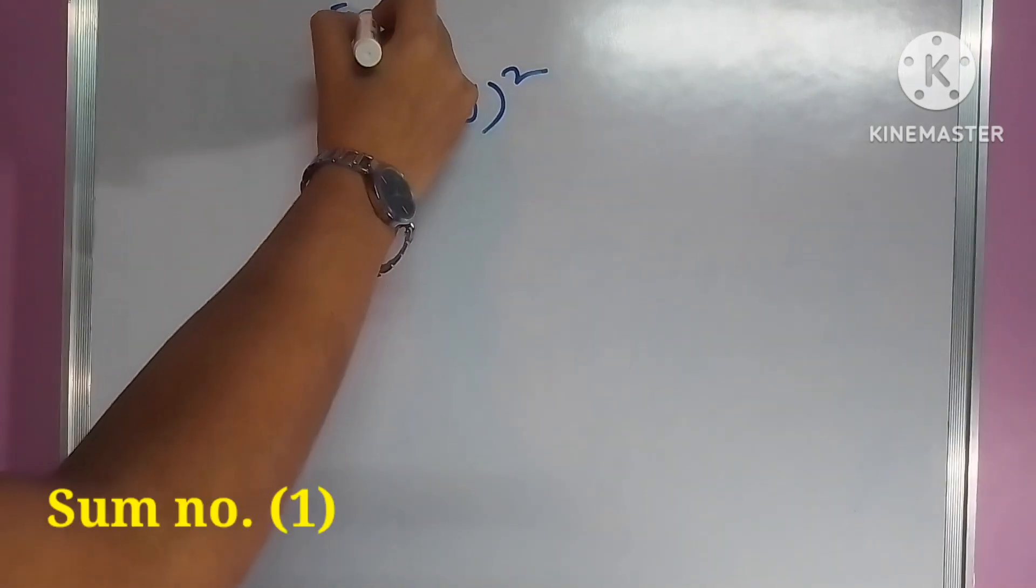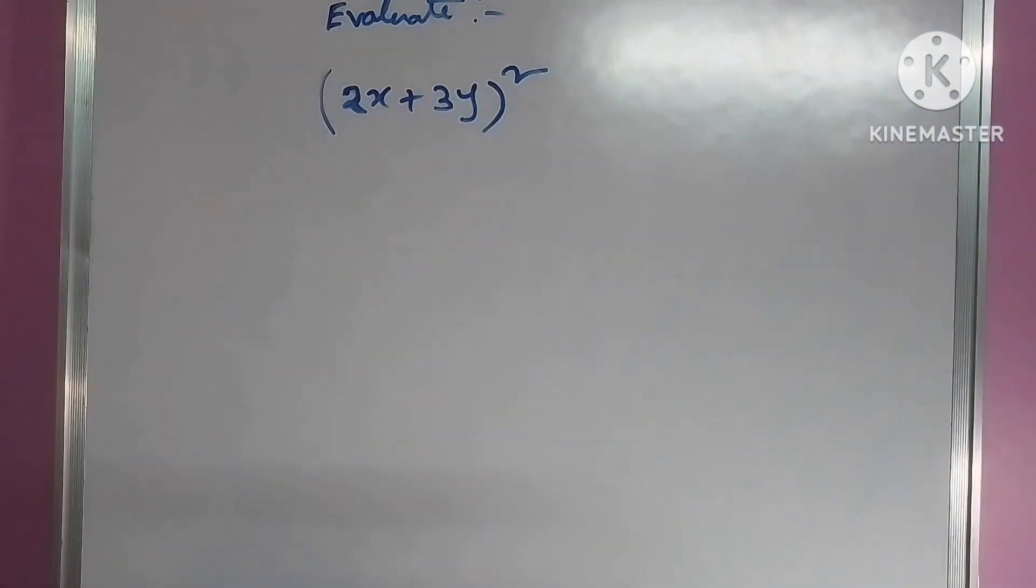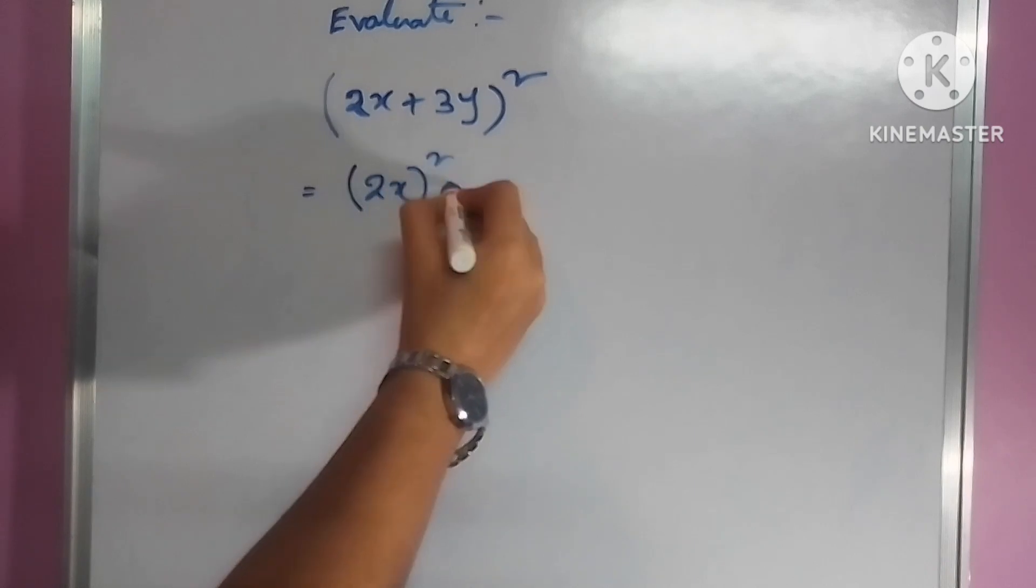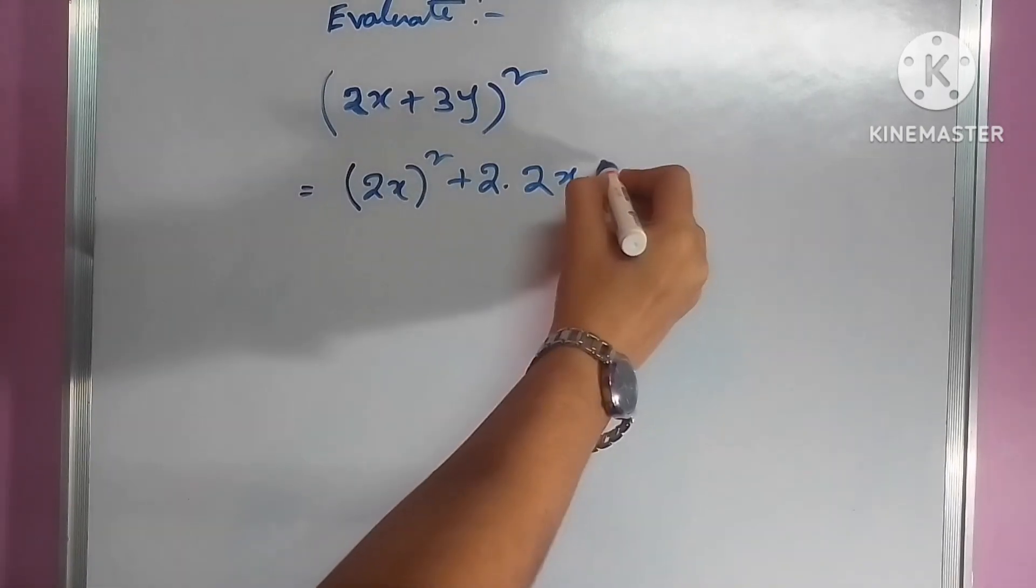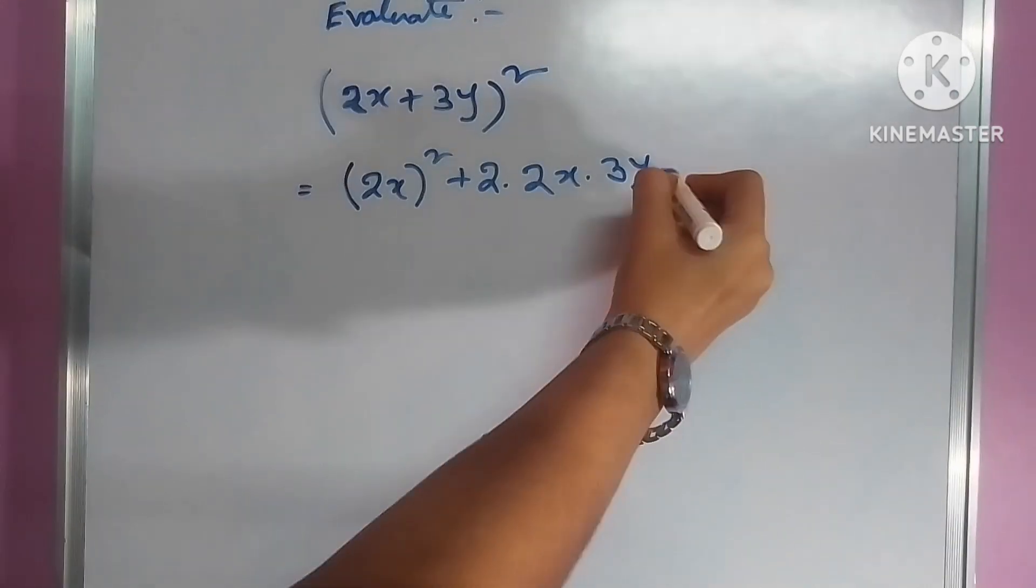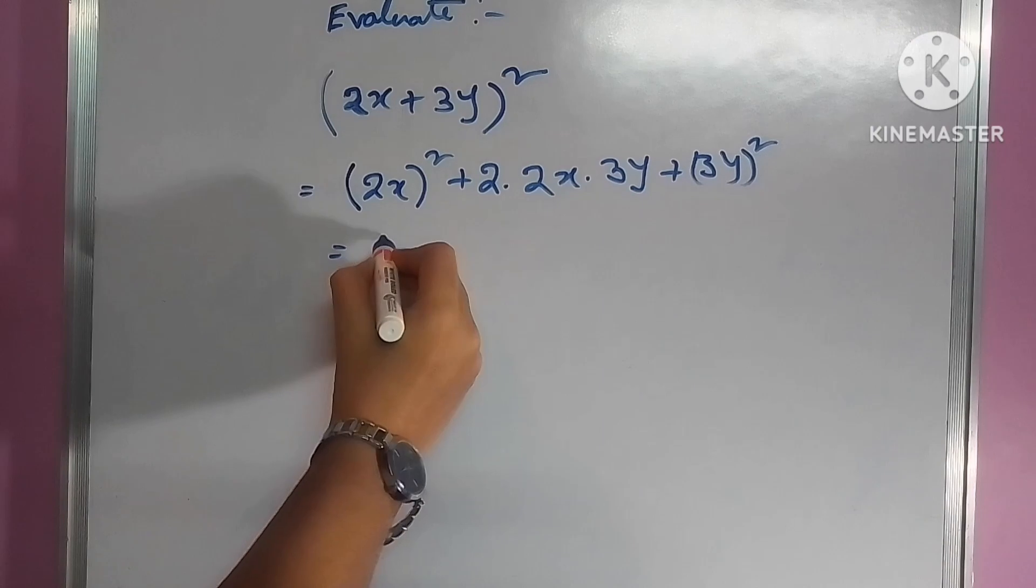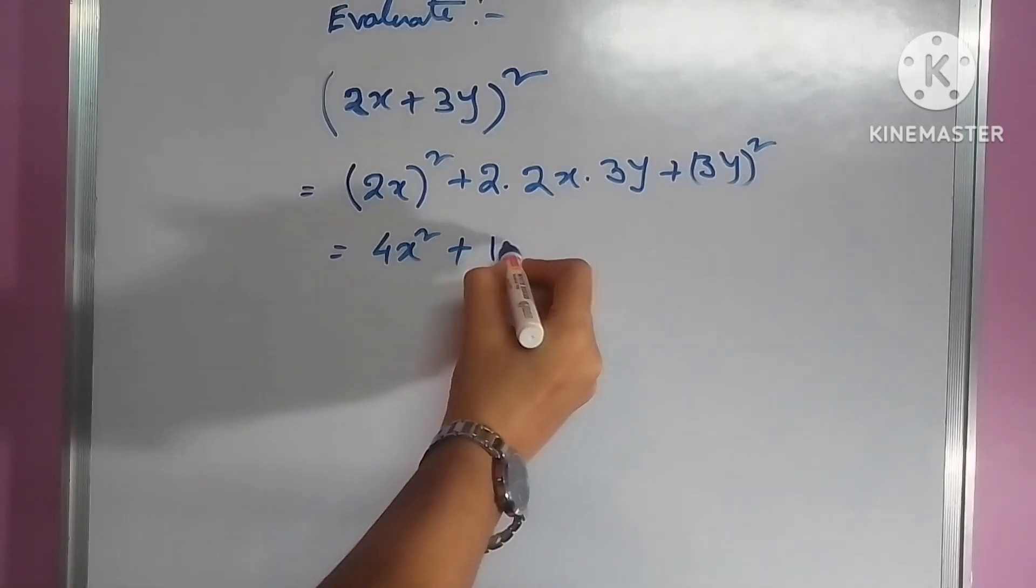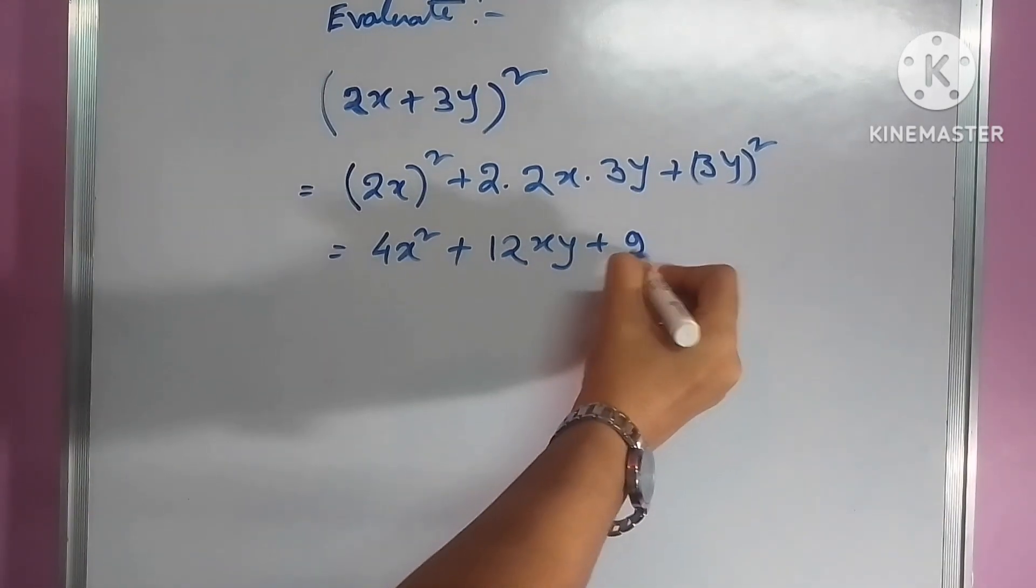In the first example, we have to calculate the value of (2x + 3y)². Here we will apply the formula of Identity 1: (a + b)² = a² + 2ab + b². After doing the algebraic calculations, we will get the answer: 4x² + 12xy + 9y².